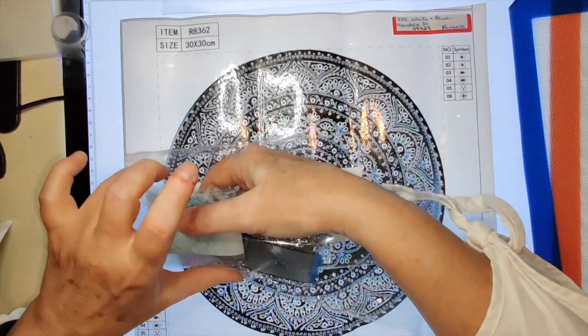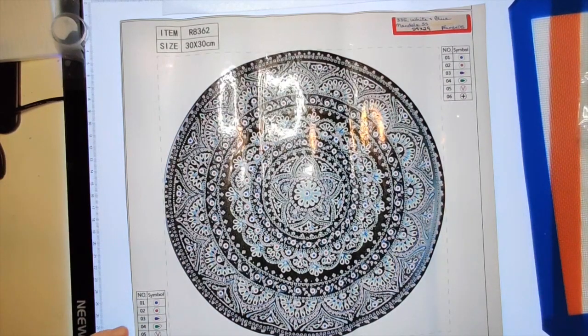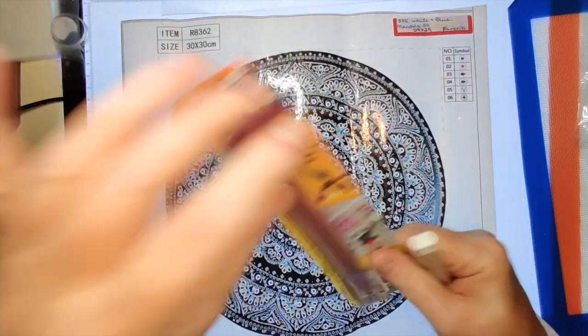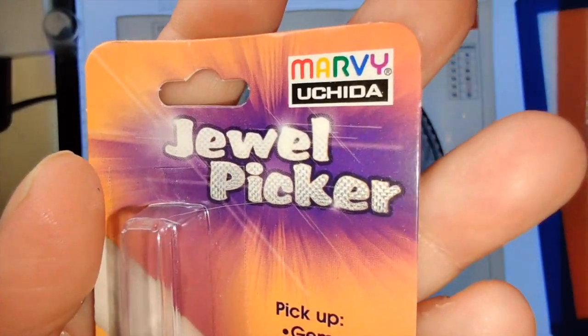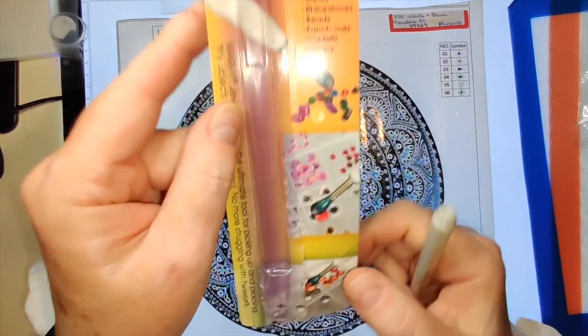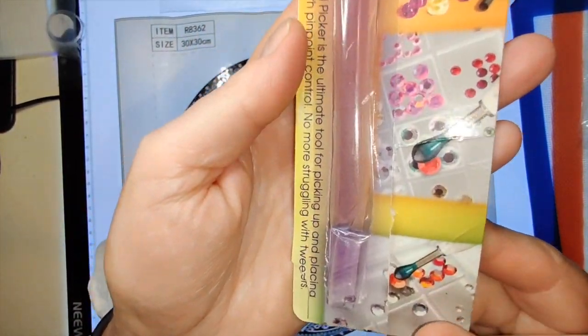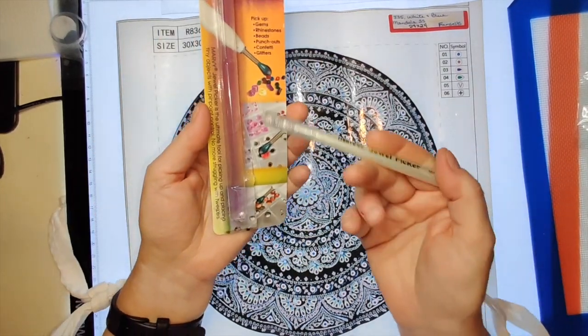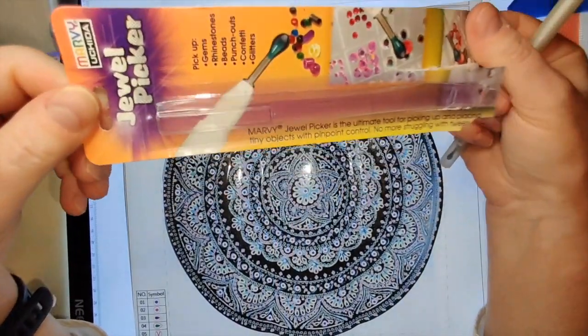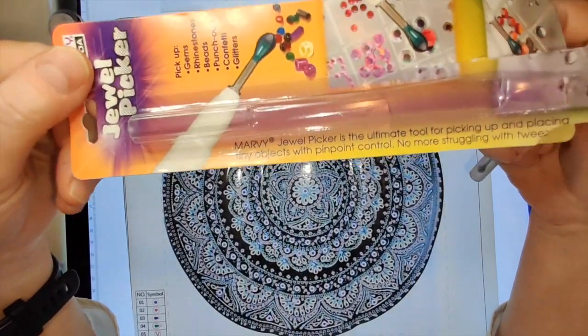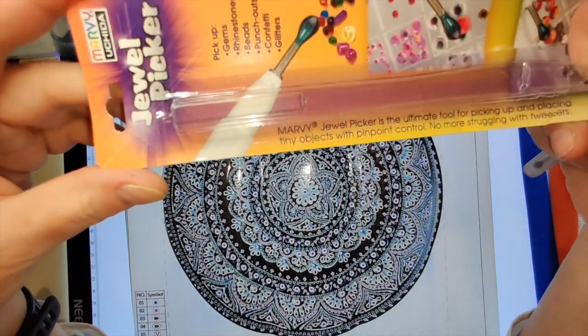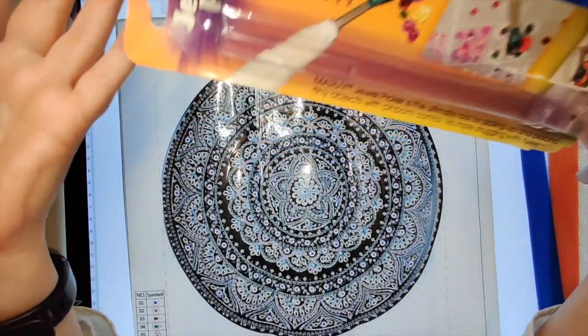So I'm gonna start it, and when I did the unboxing I showed you this tool which is the Marvy Uchida jewel picker which I found on Amazon. It looks like it's just what you need to pick up odd shaped gems, so I will be using this.